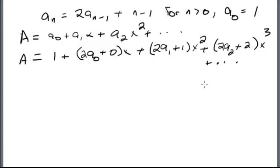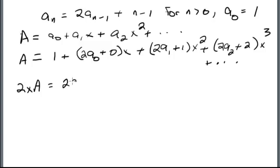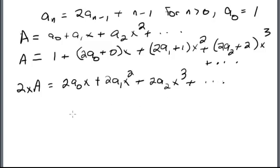Now we try to figure out what we can add together to get A — we're going to try to get something on the right-hand side that sums up to A, making some educated guesses. We look at 2x times A, which equals 2a_0 x plus 2a_1 x squared plus 2a_2 x cubed plus dot dot dot.